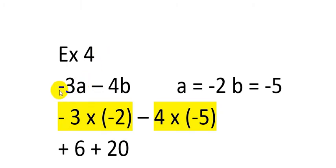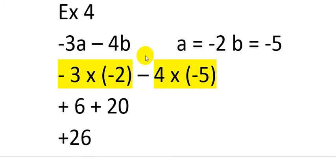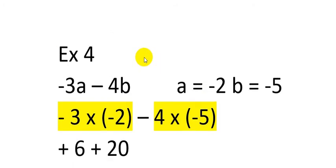The next example includes both terms as negative: minus 3a minus 4b, where the value of a equals minus 2 and the value of b equals minus 5. We substitute: minus 3 multiplied by minus 2, plus minus 4 multiplied by minus 5.